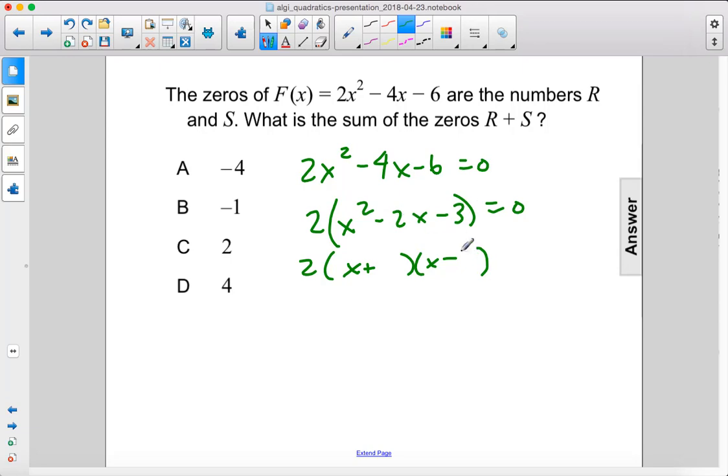And because this is negative, that means that 3 is negative and 1 is positive equals 0. So let's say that this negative 1 goes here and a 3 can go there.